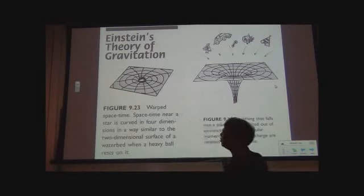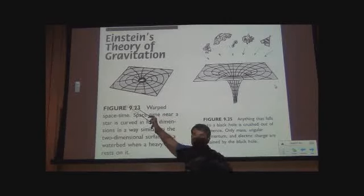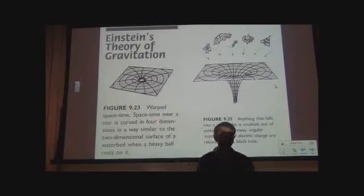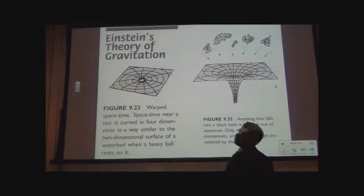And Einstein basically said that if you take a sun, a star, or the earth or something and place it in space, it curves space-time. And so objects around it behave as if they're on a trampoline, they are attracted towards the object.